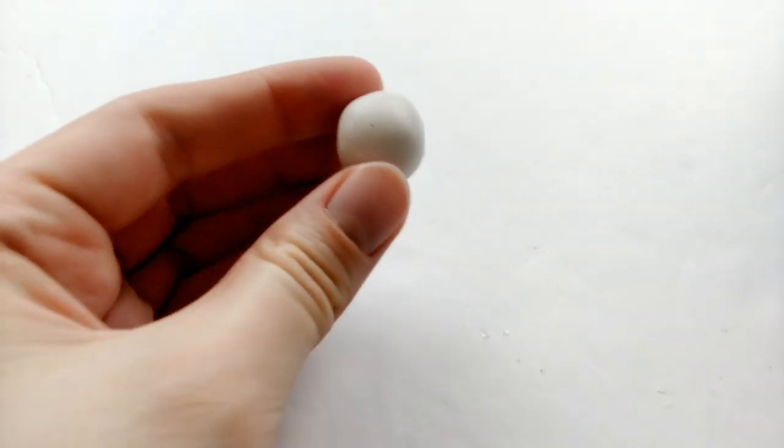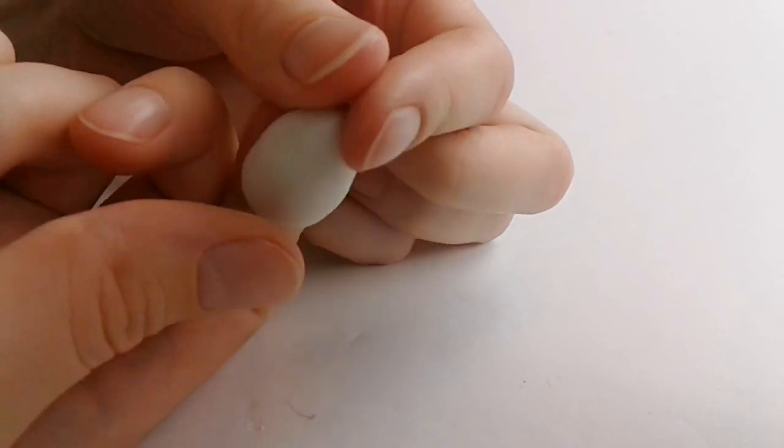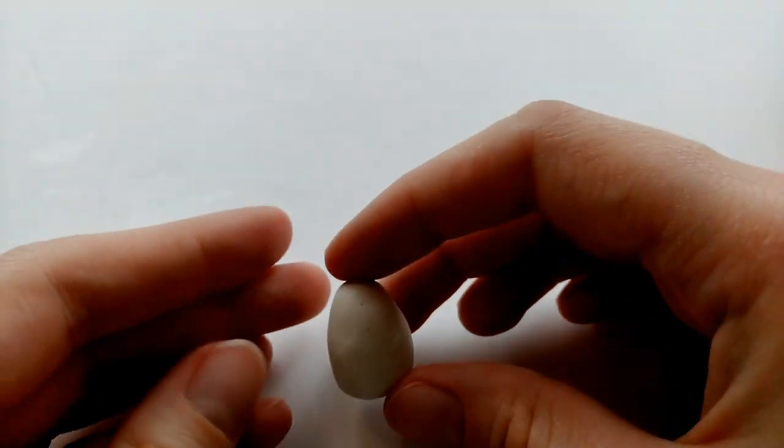Alright, first things first, we're going to start off with a ball of white clay and roll it out into a sort of egg shape. It should look something like this.